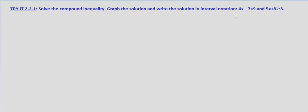With this problem we're asked to solve the compound inequality, graph the solution, and write the solution in interval notation. So we'll start off by writing the compound inequalities out: 4x minus 7 is less than 9 and 5x plus 8 is greater than or equal to 3.